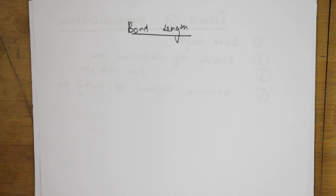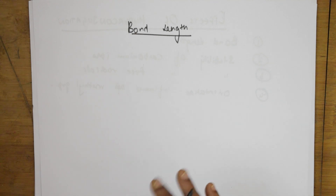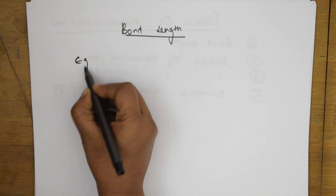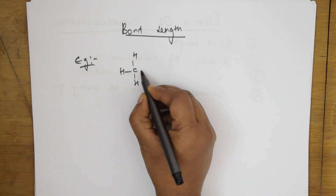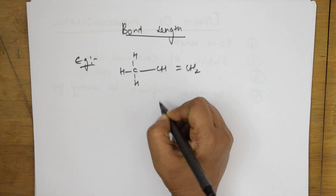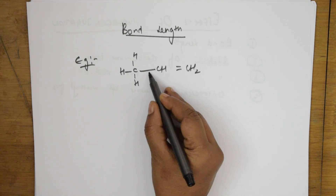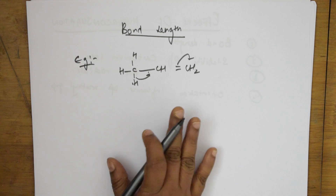Hyperconjugation affects bond lengths because during the process the single bond acquires some double bond character — when there is a shift, the double bond will become a single bond. Because of this hyperconjugation there is a shift. For example: carbon with two hydrogens, a single bond, then carbon double bond CH2. When there is a shift of hydrogen due to hyperconjugation, this bond shifts here and this bond shifts here — that is hyperconjugation.